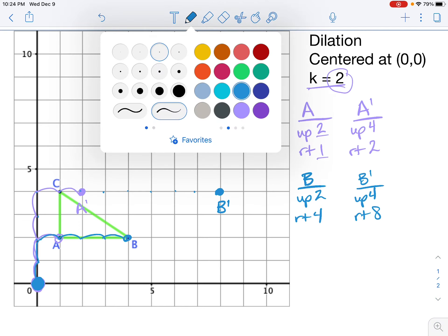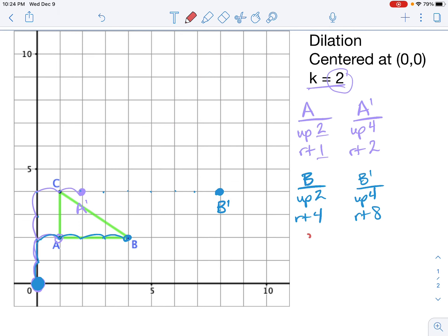Finally, we're going to do the same thing with C. To get from the center of dilation to point C, it's up 4, right 1. So that means C prime will be double that - it's going to be up 8, right 2. I go back to the center of dilation and count up 8, right 2. So this is the location of C prime.